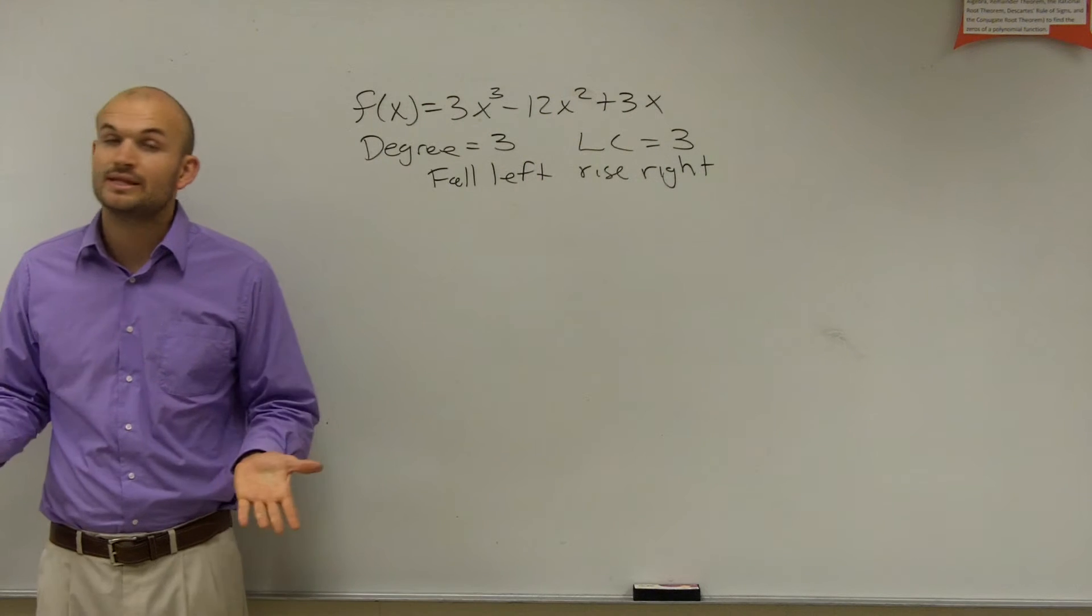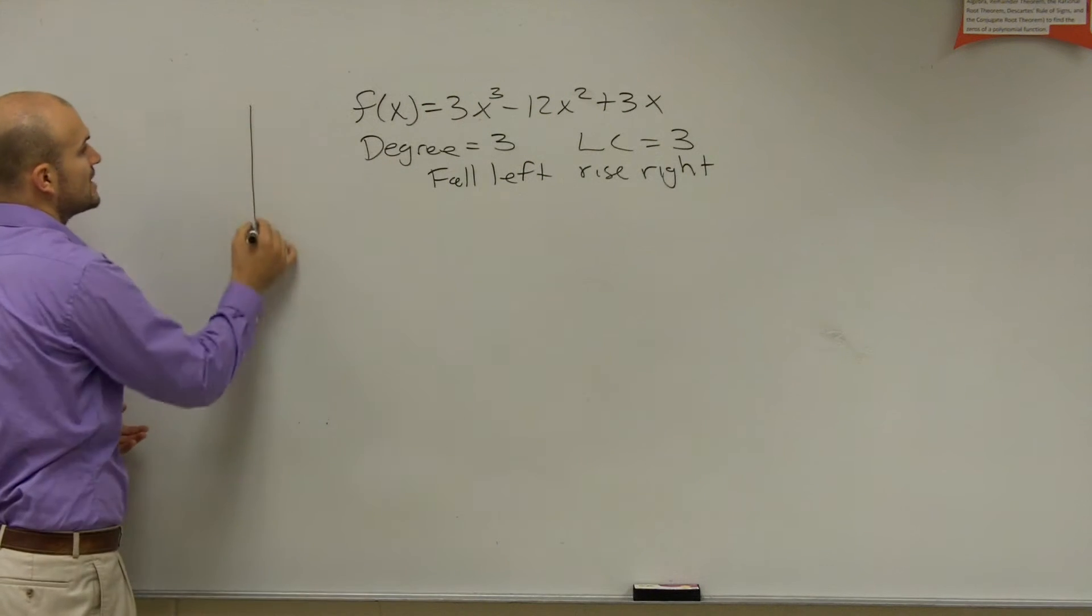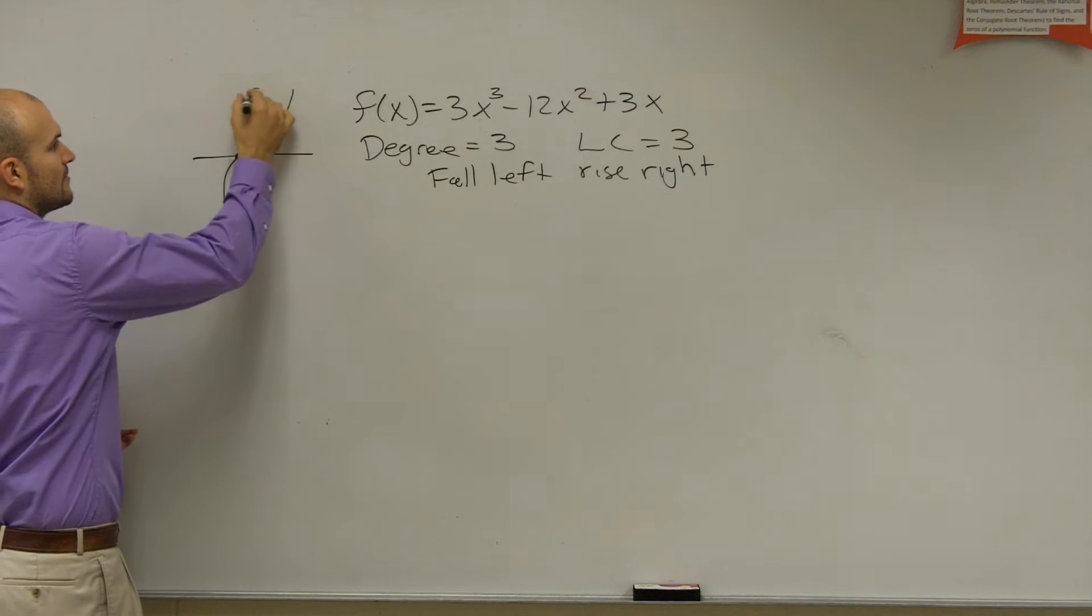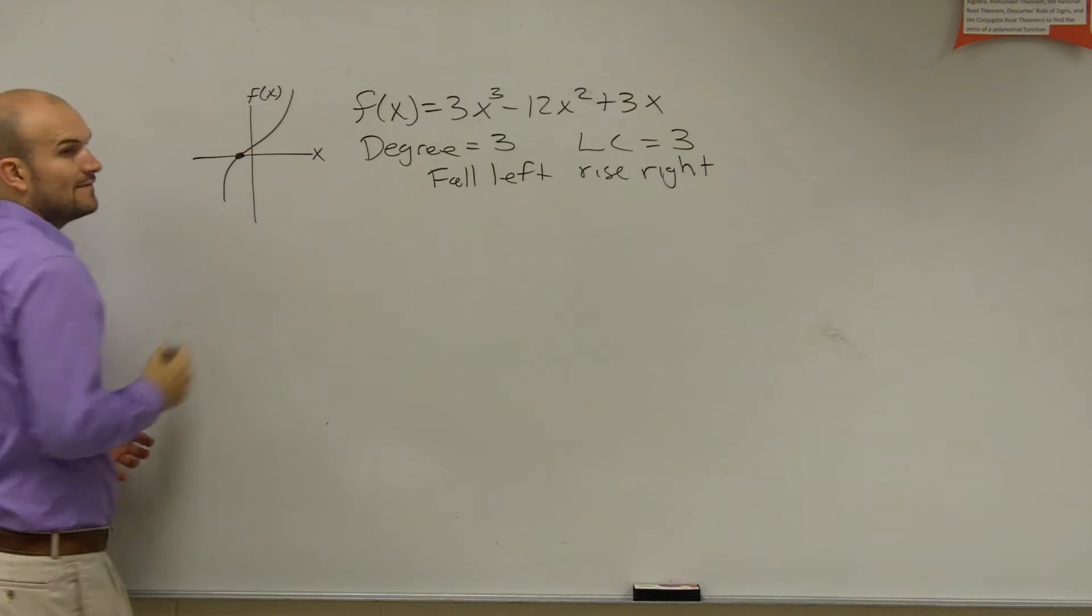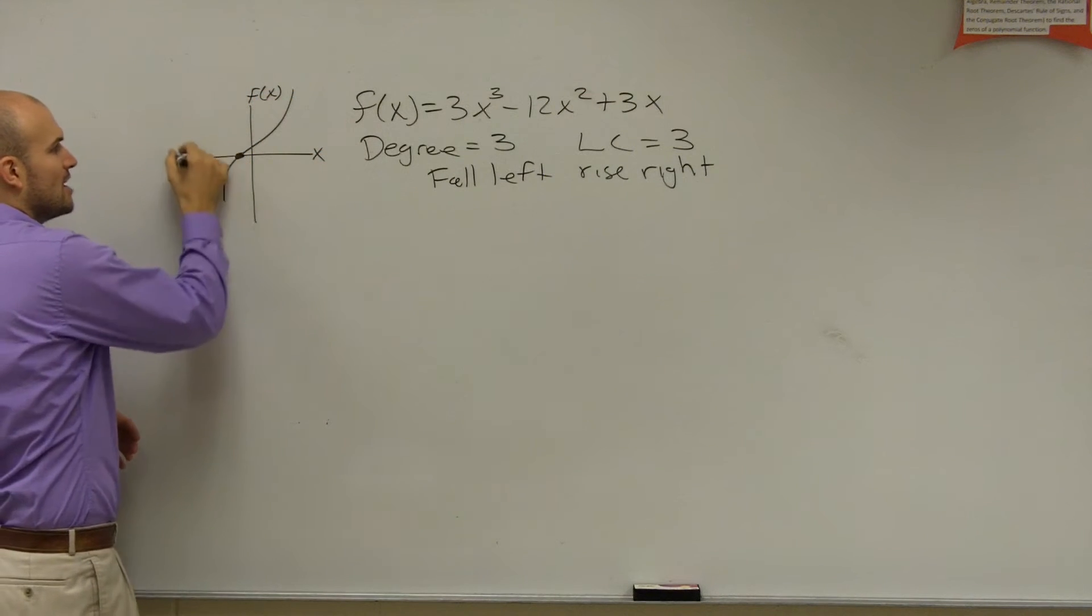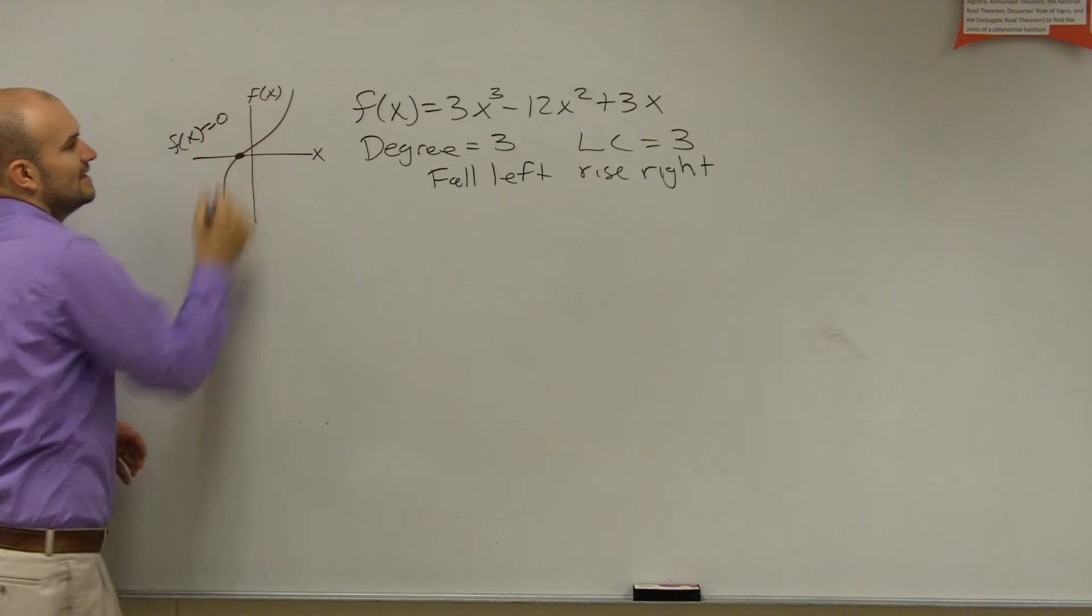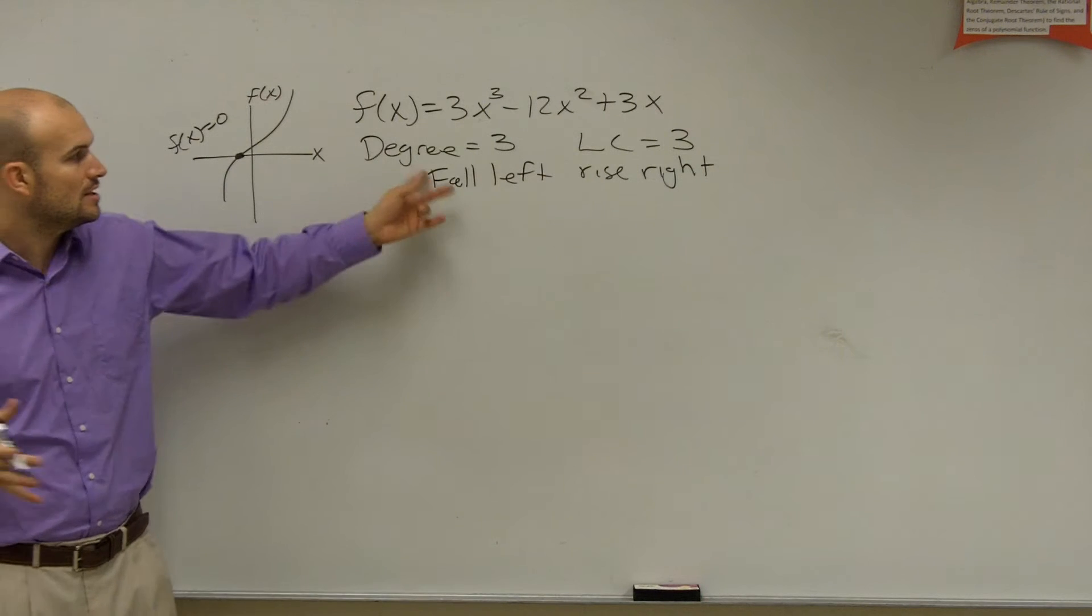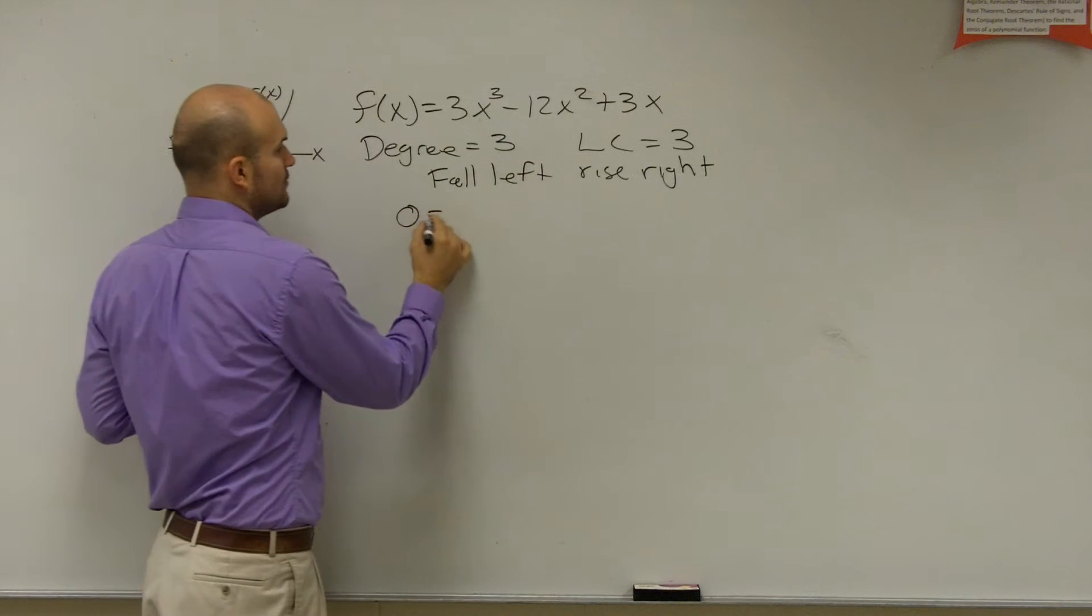So now, the next thing we need to do is determine the intercepts. Remember, the intercepts are where the graph crosses. So if I add f of x at x, where my graph crosses, f of x equals 0. We have to remember that. So I'm going to set my function equal to 0.